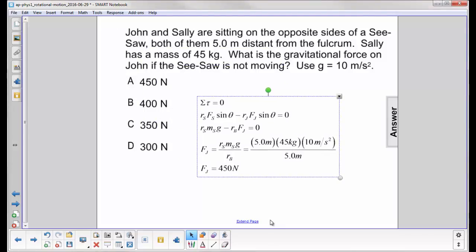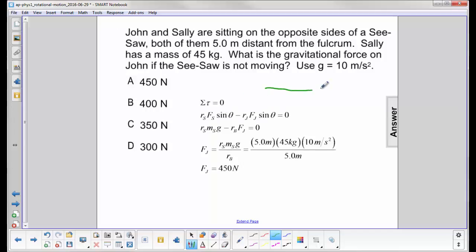Here's our sum of the torques equation. Since nobody's moving, the sum of the torques has to equal zero. The magnitude of the torque is R F sin theta. In this case, we have two sides of a fulcrum.